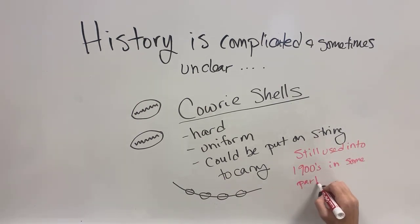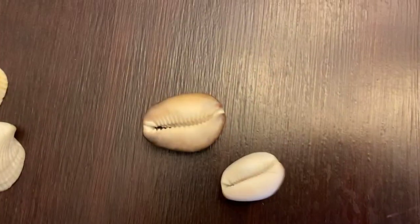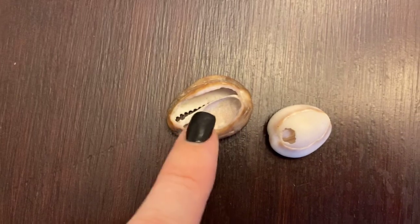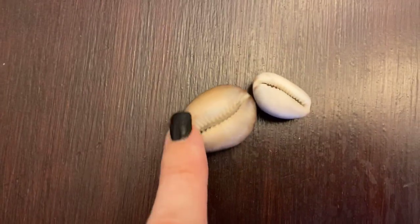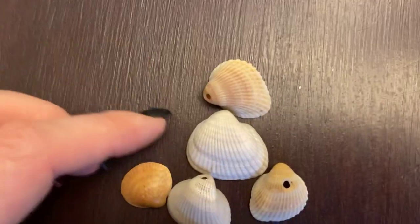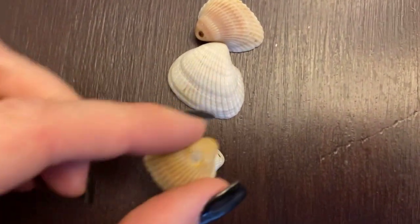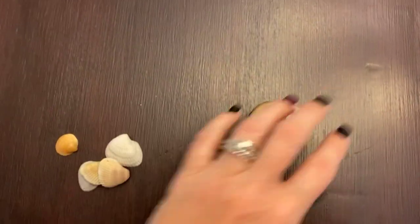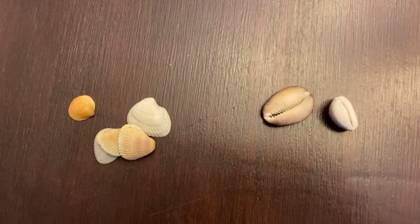Cowrie shells are very hard and very uniform, and you could put them on a string that made them easy to carry, and they could be exchanged as money. They were actually still used into the 1900s in some parts of the world. Here we have some seashells, and you can see these are cowrie shells. A lot of them have these holes on the back, so you can string them up and carry them around, which is why some cultures have necklaces made out of these. These are also a different type of shell with naturally occurring holes, also used for money — super hard, super durable, a really good choice for money in early times.